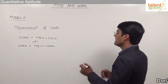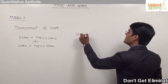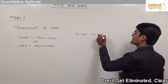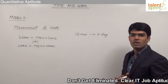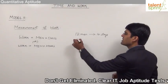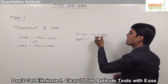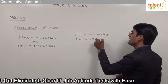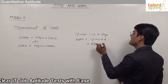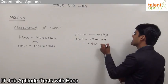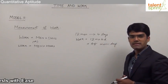For example, assume that 12 men can finish a piece of work in 4 days. The work done has not been specified, but we can measure it as number of men into number of days: 12 men working for 4 days gives 48 man-days. So the work can be taken as 48 man-days.